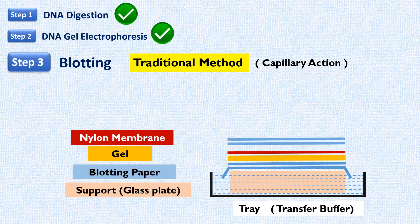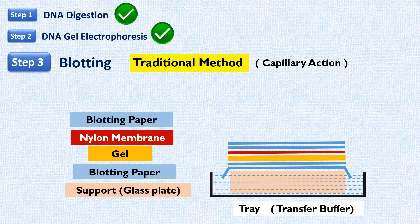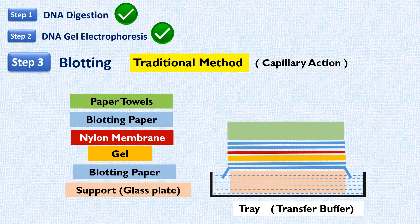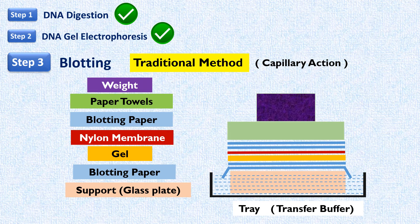A thick stack of blotting papers or absorbent paper is placed over the membrane, followed by three to four inches of paper towels, and the entire stack is pressed down with a weight on top. The buffer rises through the gel by capillary action, carrying the DNA molecules with it. Once the DNA molecules reach the nylon membrane, they become adsorbed tightly to it and are retarded. The remaining liquid passes through and is absorbed by the paper towels. During this transfer, the DNA fragments retain the same pattern of separation they had on the gel.